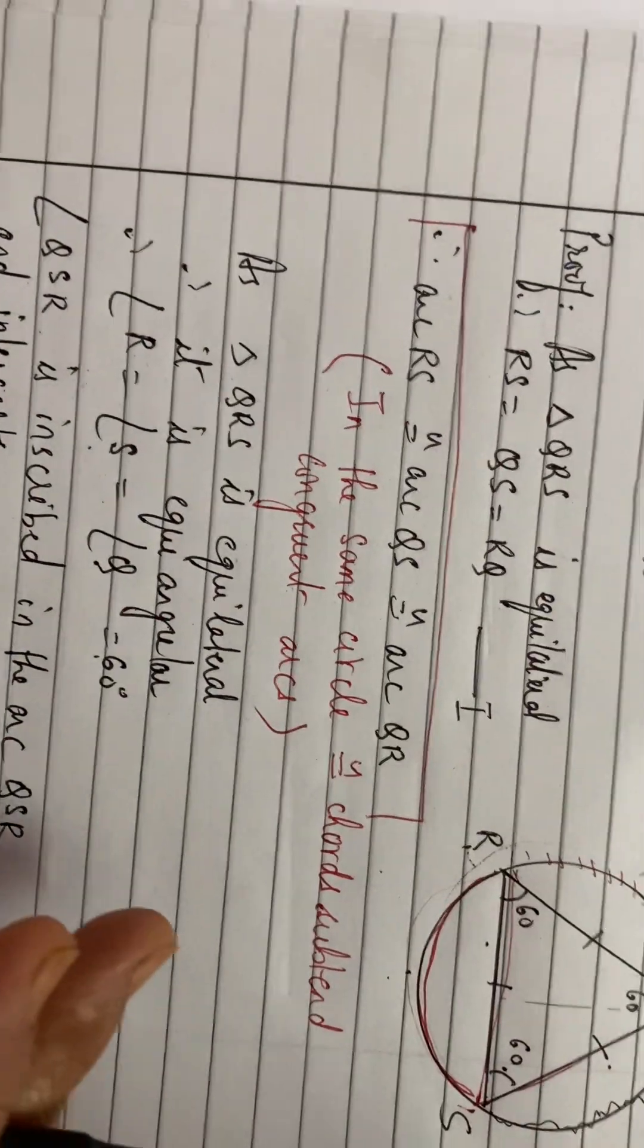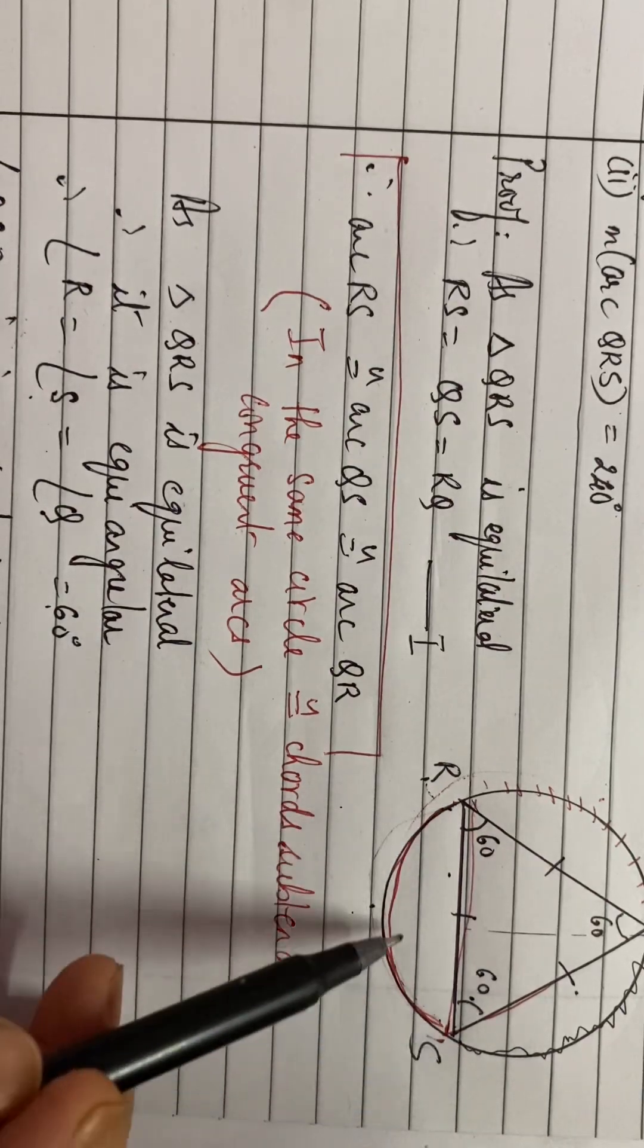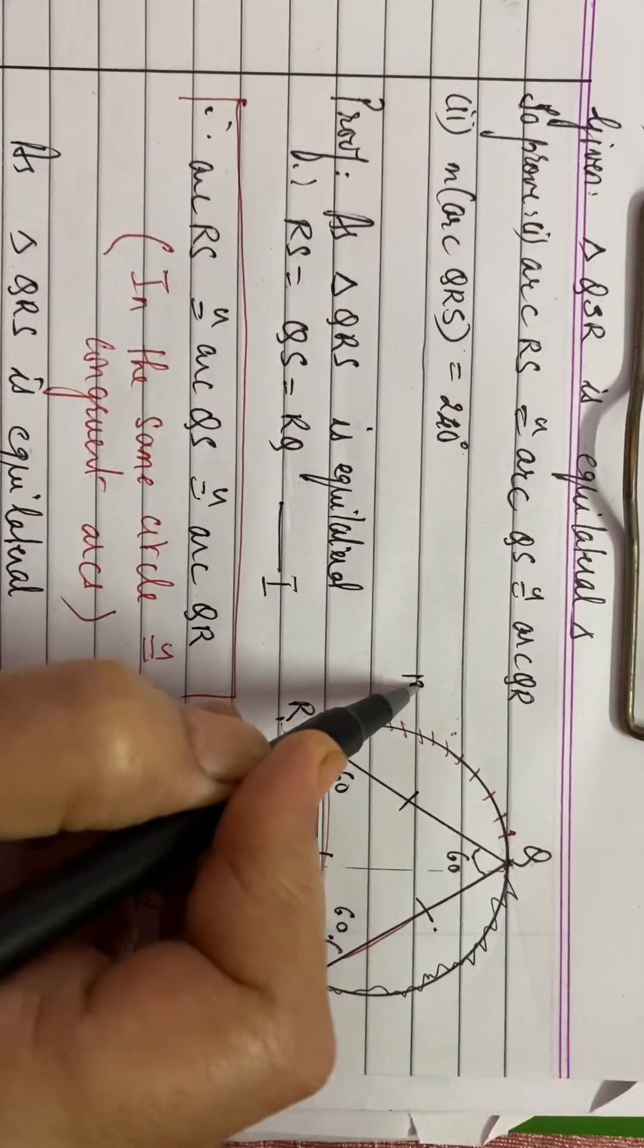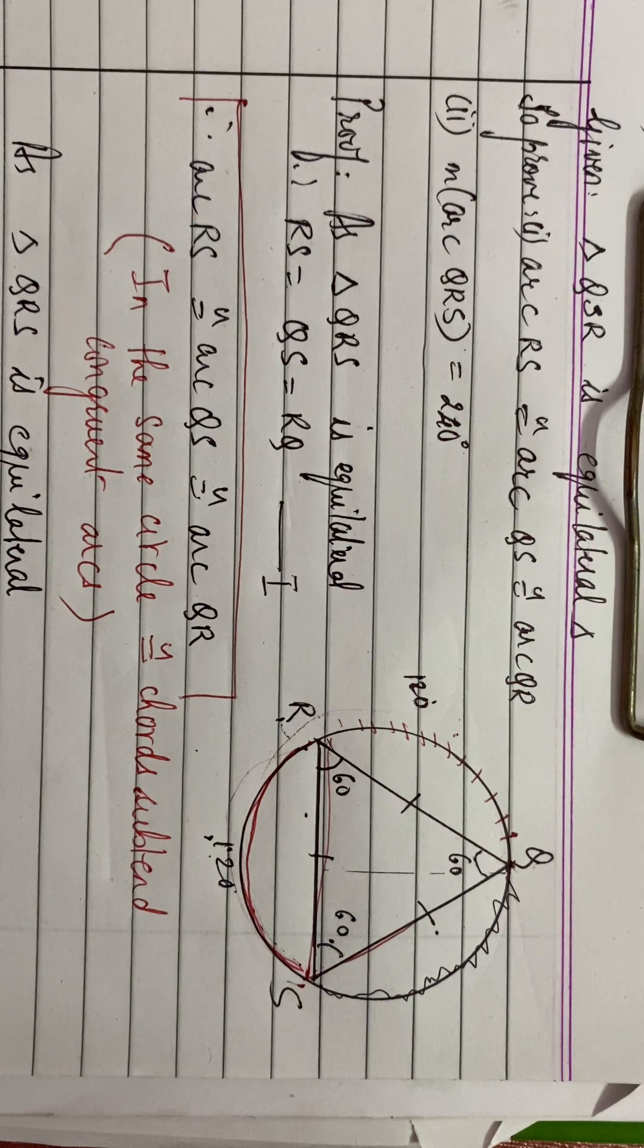Now similarly, we can say that measure of arc RS, that will also be 120. This is 120 degrees, right?